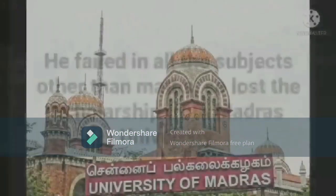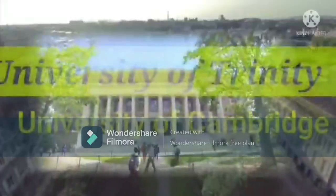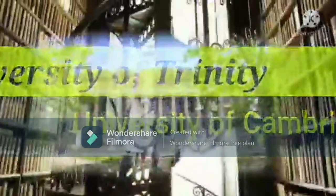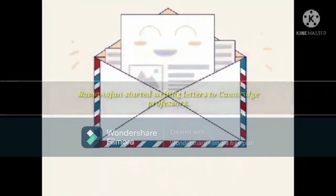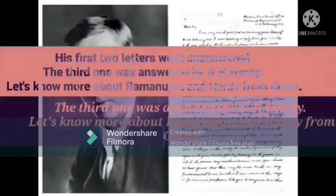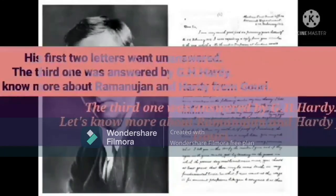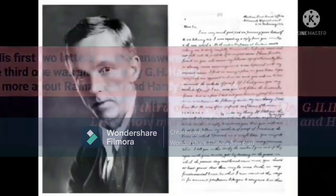He failed in other subjects so lost his scholarship from Madras University. Later on, he received a scholarship from both Trinity and Cambridge. He started writing letters to Cambridge professors. The first two letters went unnoticed. But the third letter was answered by G.H. Hardy, the person who helped him to secure a scholarship. Let's know more about them.